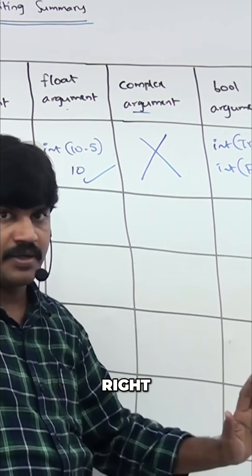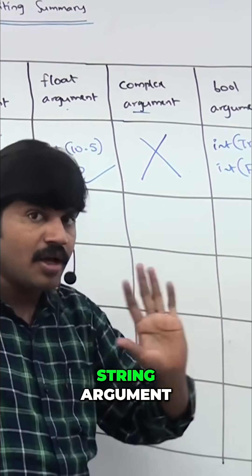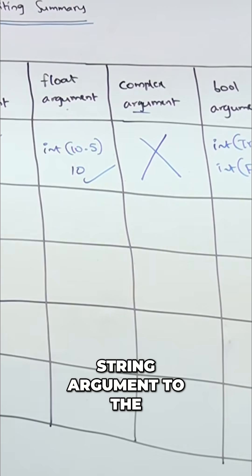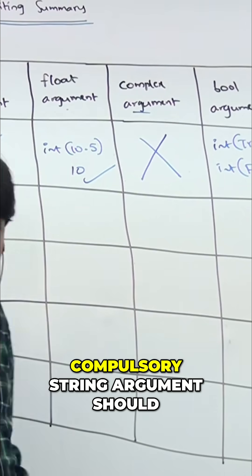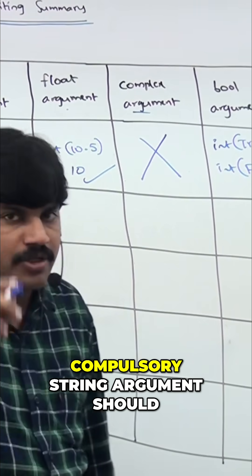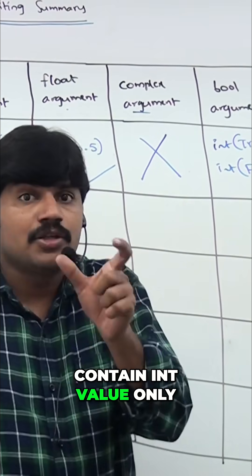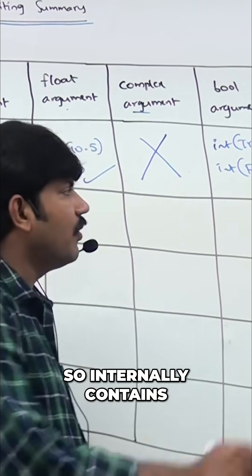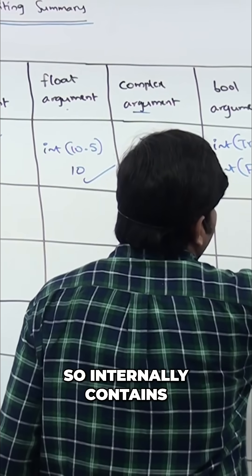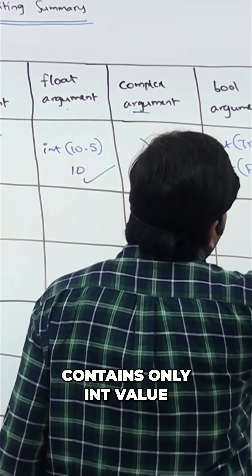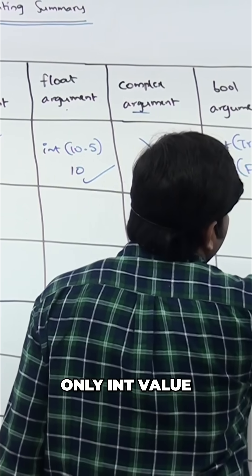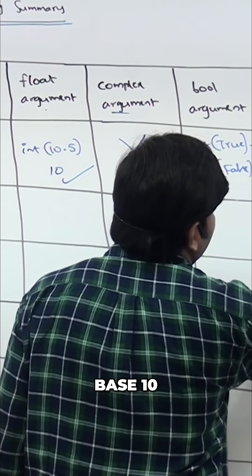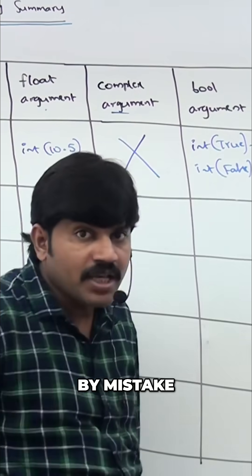String arguments are very important. If you are passing a string argument to the int function, the string must compulsory contain an integer value only, and it must be specified in base 10. The string should internally contain only an integer value under base 10 — this is a very important rule.